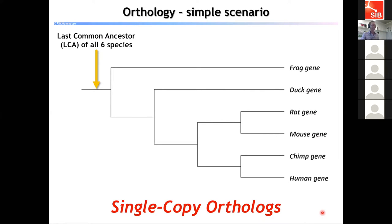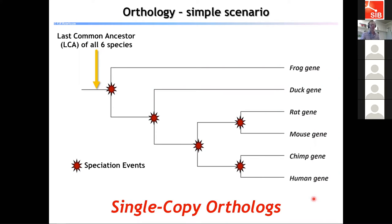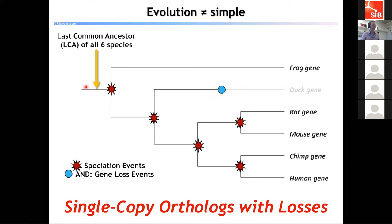Here we have six species — frog, duck, rat, mouse, chimp, and human — and their last common ancestor. Under the simplest evolutionary scenario, only speciation events occur at each node, resulting in a single copy ortholog in each of the six species since their last common ancestor. Of course, evolution isn't always that simple. We also have gene loss events — here this gene has simply been lost in the duck lineage, leaving the rest as single copy orthologs in the other five species.